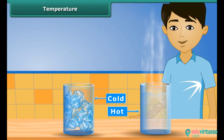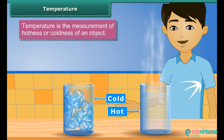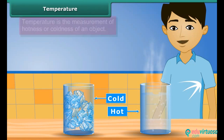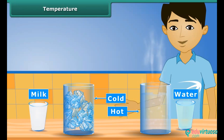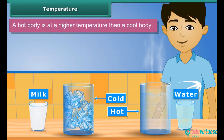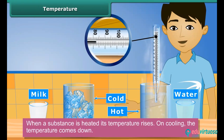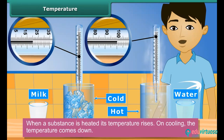Now we will learn the concept of temperature. Temperature is the measurement of hotness or coldness of an object. We say that water from the fridge is cold and milk is hot — but how much cold is the water? Is it cooler than ice? How much hot is milk? Is it hotter than boiling water? For this we need a measure. A hot body is at a higher temperature than a cool body. When a substance is heated, its temperature rises; on cooling, the temperature comes down. The degree of hotness or coldness in a body is described as its temperature.